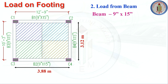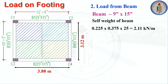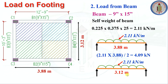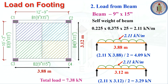Beam size is 9 inches by 15 inches. Self-weight = 0.225 × 0.375 × 25 = 2.11 kN/m. For span C1 to C2 (3.88 m): load on C1 = WL/2 = 2.11 × 3.88 / 2 = 4.09 kN. For span C3 to C1 (3.12 m): WL/2 = 3.29 kN on each column. Total beam load on C1 = 4.09 + 3.29 = 7.38 kN.